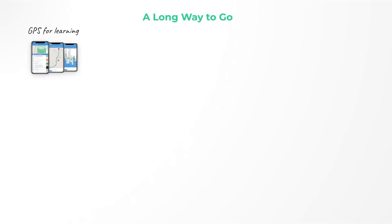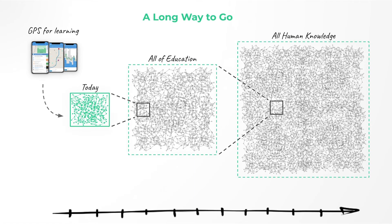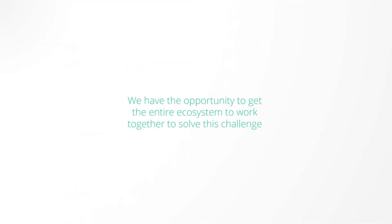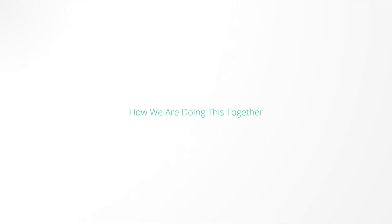But we still have a long way to go. While we have the GPS-like tools, our current map covers a small fraction of what's available — we still have much more to map out. As more collaborators join us to scale this map, we will be able to empower more learners to learn anything they want. We have the opportunity to get the entire ecosystem to work together — from companies to learning institutions to civil society organizations and governments — each collaborating seamlessly to scale this impact.